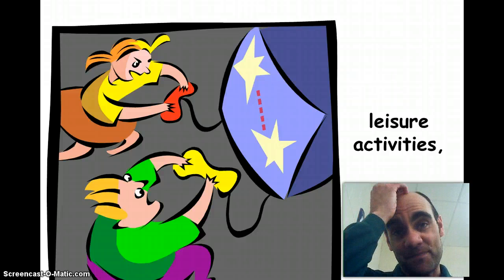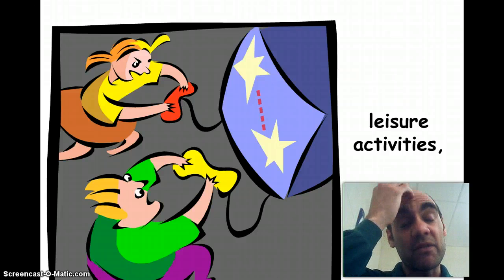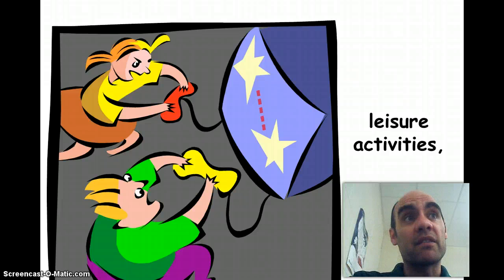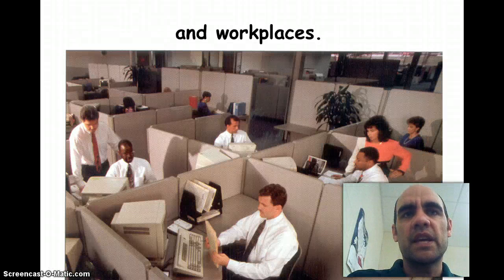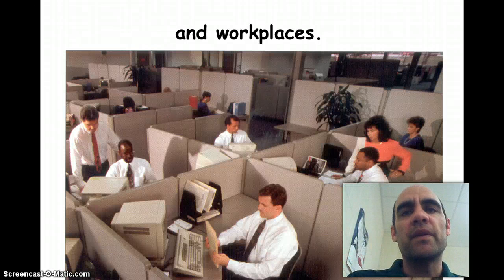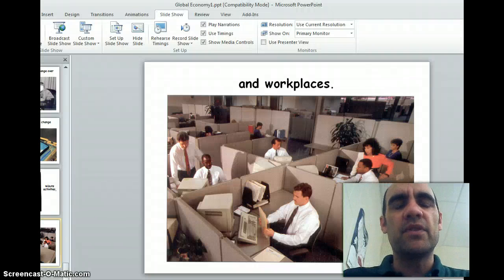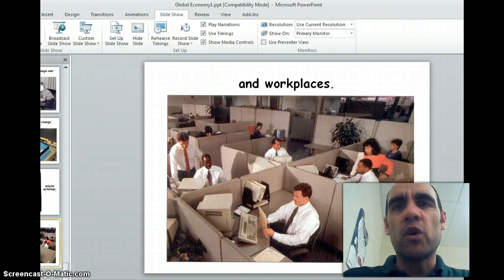Leisure activities have changed too — a lot of kids play video games, and while video games have been around for a while, they're totally different now. Our workplaces have changed as well; how many people work from home and telecommute? Alright, that's all I've got today. That's a review of Unit 7. I hope everyone has a good day. Thanks, guys.